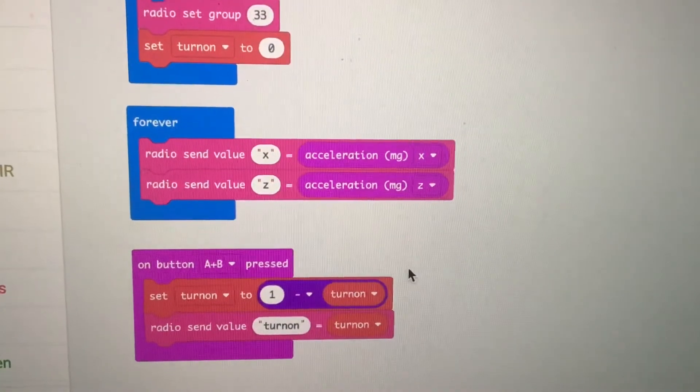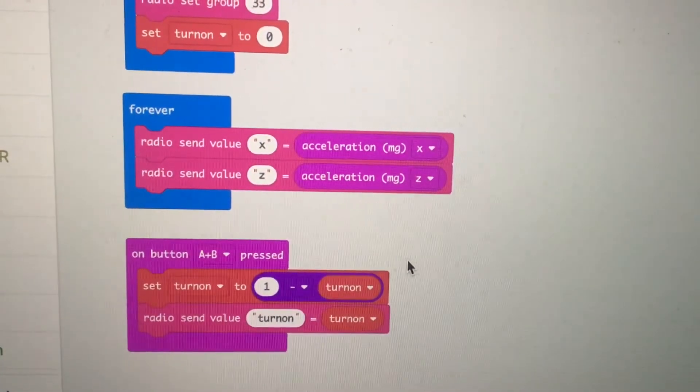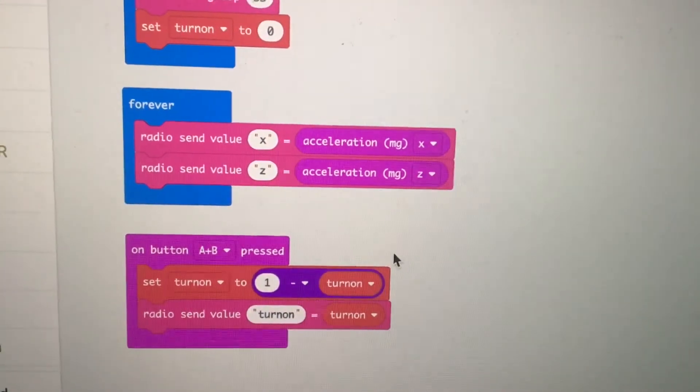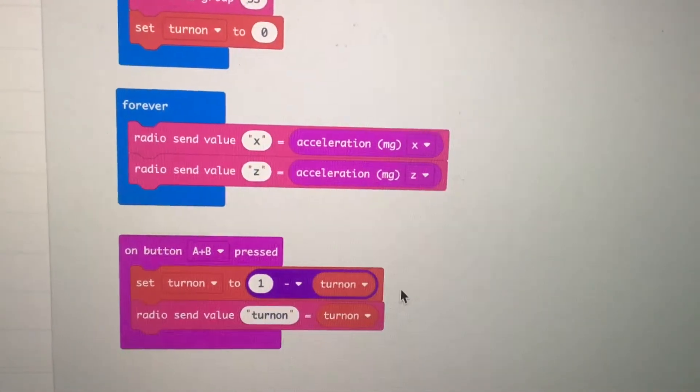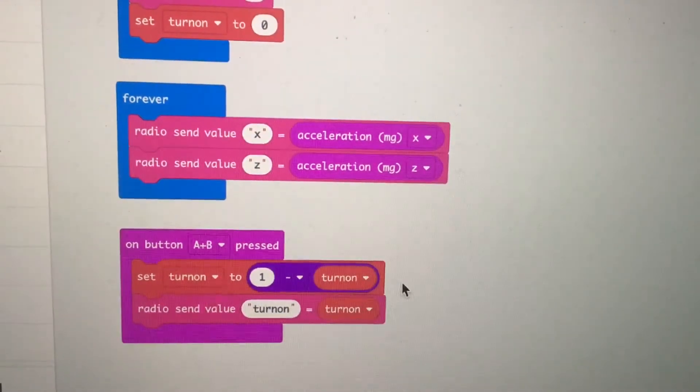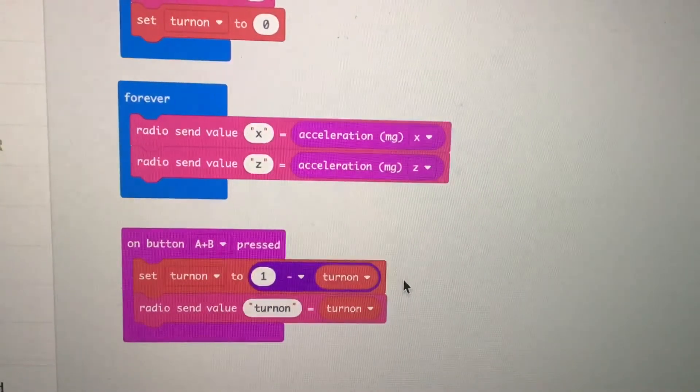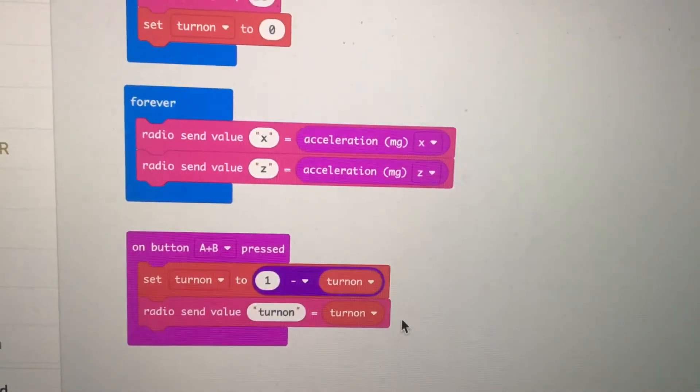And the last part is the start and stop section which I do by pressing both A and B at the same time. So it says if it sees both A and B buttons pressed at the same time, then I switch the variable turn on from zero to one or from one to zero. And I send the value over the radio.